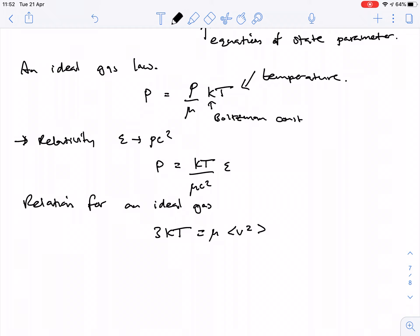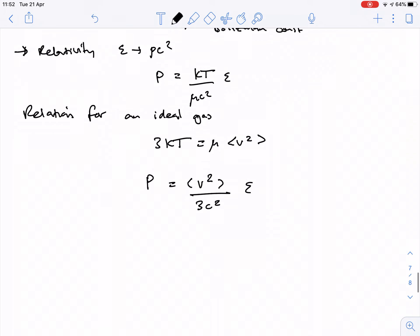So in this case, p is just essentially v squared over three c squared times epsilon. And you can view this as being w, which is your equation of state parameter.